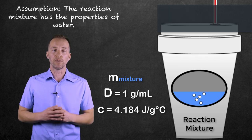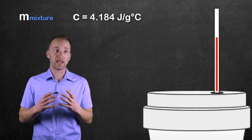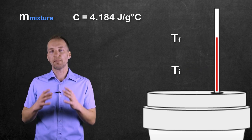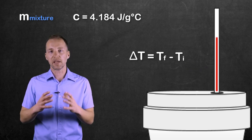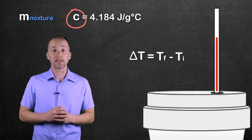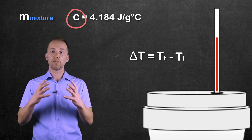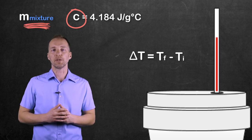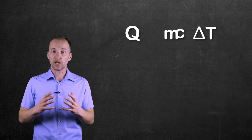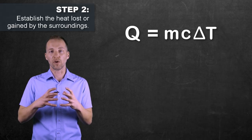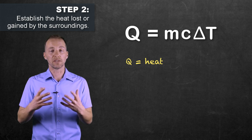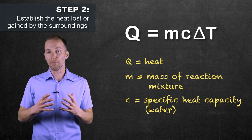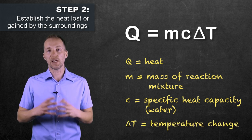The only thing we're actually measuring in coffee cup calorimetry is the temperature change. When we establish that temperature change and combine it with the specific heat capacity and the mass of water — calculated from the volume using the density of water — that gives us this relationship: Q, the amount of heat the water absorbs or loses, is equal to the mass times the specific heat capacity multiplied by delta T, the change in temperature.